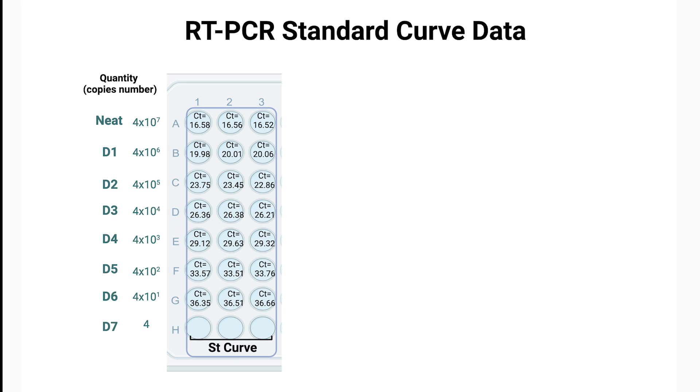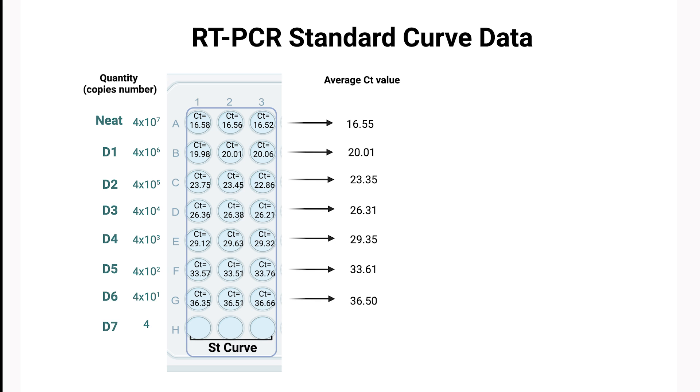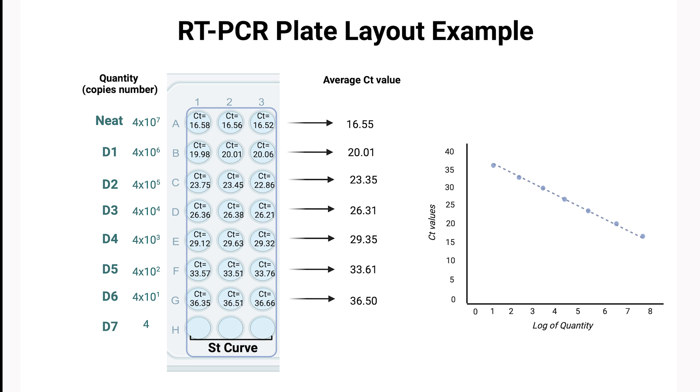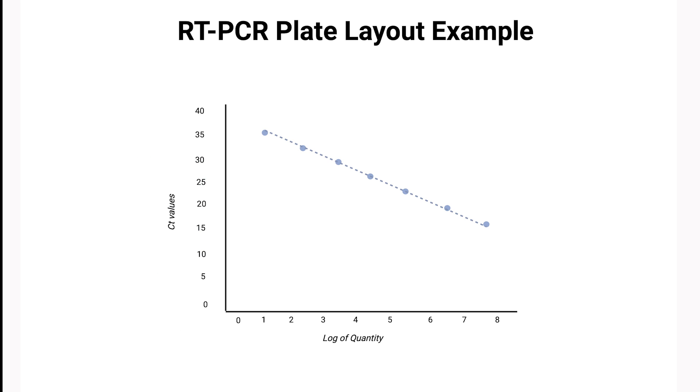The resulting CT values, along with the known DNA concentrations, can be used to plot a standard curve. We plot our standard curve by placing the average CT values on the y-axis against the logarithm of the starting quantities of our standards on the x-axis. This approach gives us a beautifully linear relationship, making the analysis straightforward and clear.